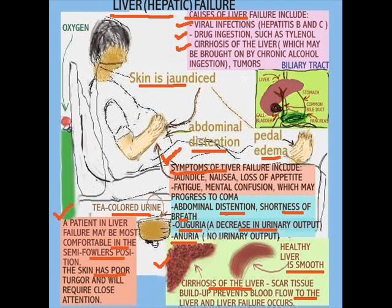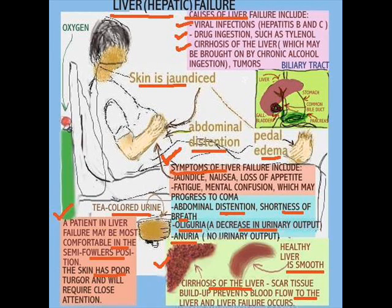Now we have liver failure. Causes include alcohol ingestion, viral infections, certain drugs, and tumors. On screen is an image showing what a healthy liver looks like versus one that is not healthy — one that has cirrhosis. One thing is clear: this patient has a very distended abdomen and is jaundiced — look at the skin, it's almost gold. The urinary output is tea-colored, usually very low, or the patient may not have urine at all. There is a lot to learn about the liver, and more information is available at DNAssist.com.